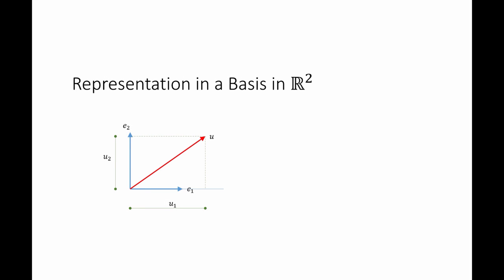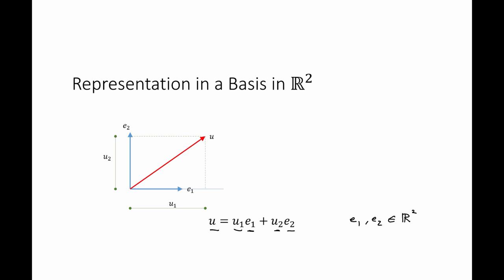We're going to start by showing how this is done in R2, in a two-dimensional vector space. A vector in a two-dimensional vector space has two components, u1 and u2. u1 is the component of u in the direction of e1, and u2 is the component of u in the direction of e2. So I can write the vector u as u1 multiplied by the vector e1 plus u2 multiplied by the vector e2. It's very important to know that e1 and e2 are vectors, while u1 and u2 are real numbers.